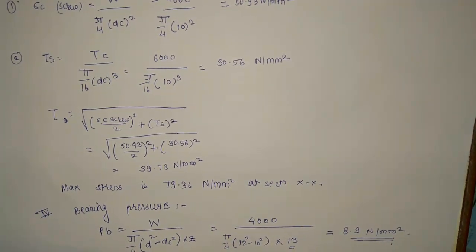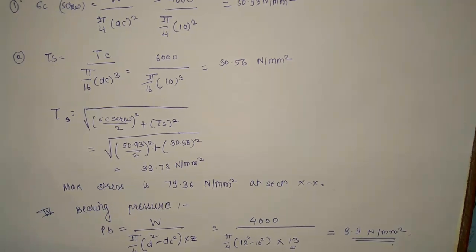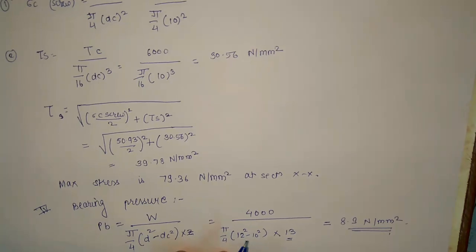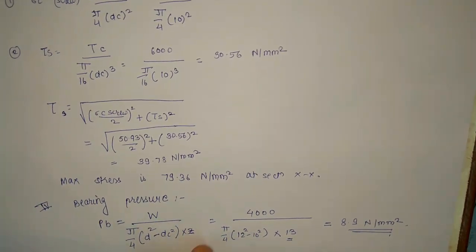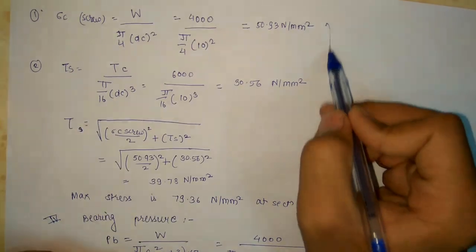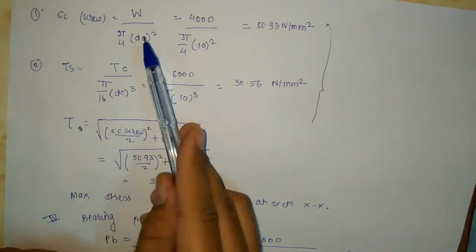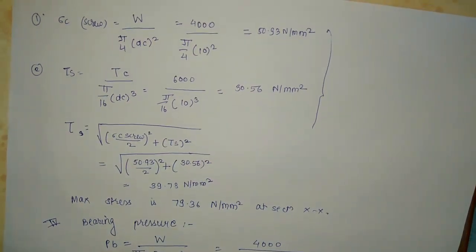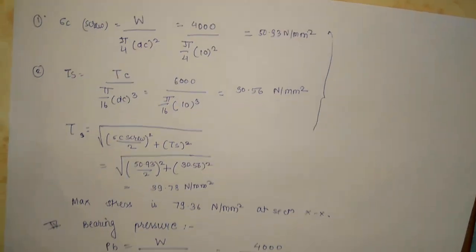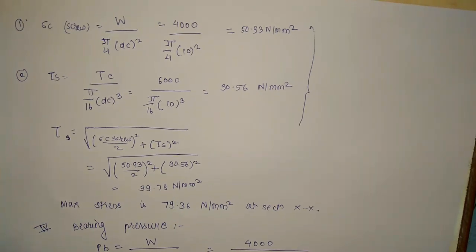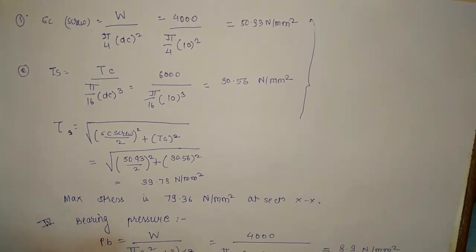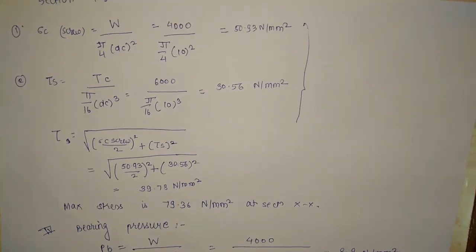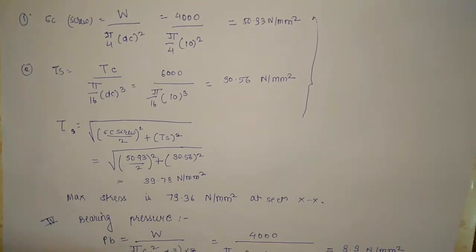These are the steps required to design a C-clamp as asked in examinations. It is a lengthy process requiring careful calculations. Remember: section YY is under torsion (shear stress) and compressive stress, while section XX is under shear stress and bending stress. Stay tuned for further screw jack numericals in the next video.